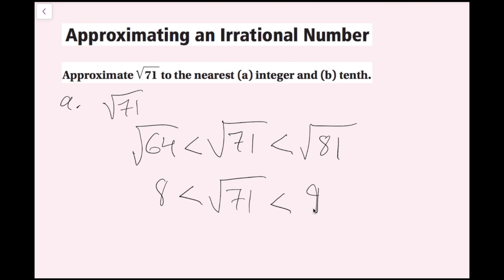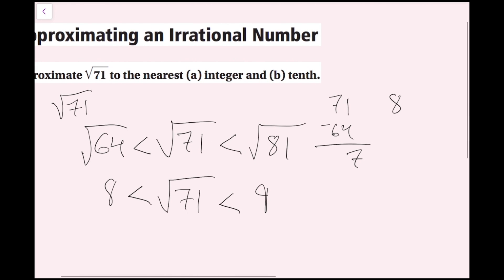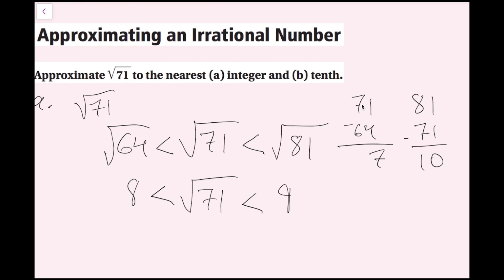Now I need to figure out which whole number the square root of 71 is closer to. 71 minus 64 is 7, so 71 is 7 away from 64. And 81 minus 71 is 10, so 71 is 10 away from 81. Since 71 is closer to 64, and the square root of 64 is 8, the nearest integer approximation for the square root of 71 is 8.